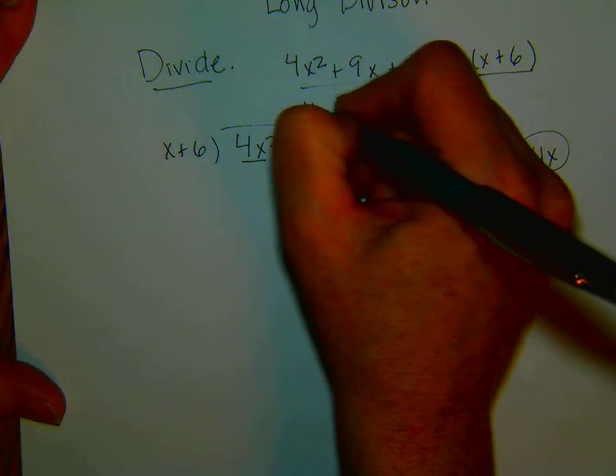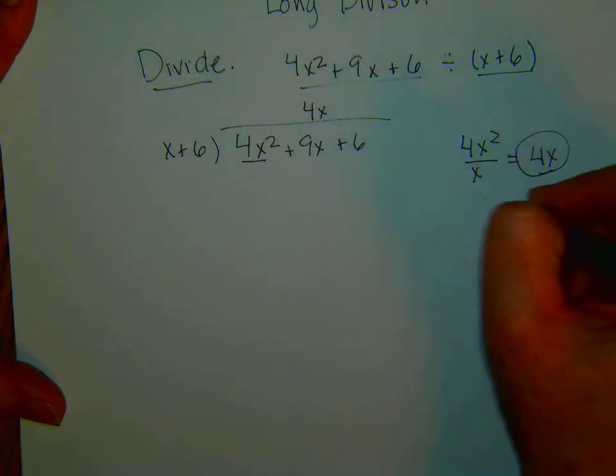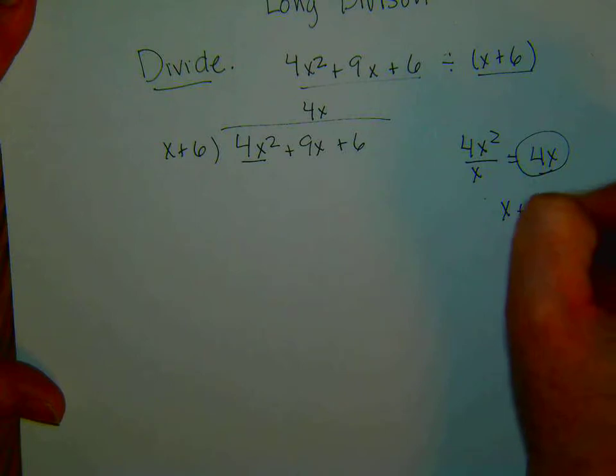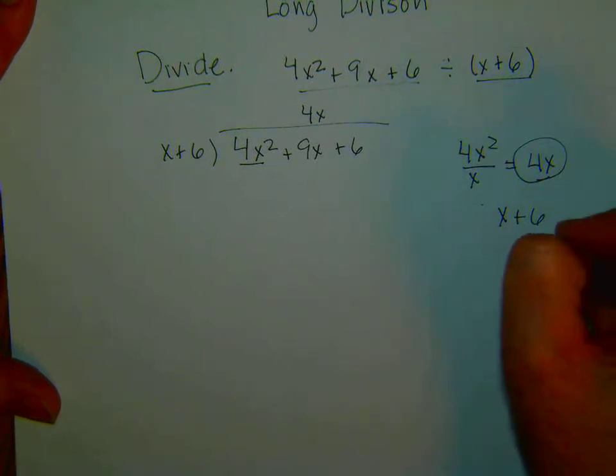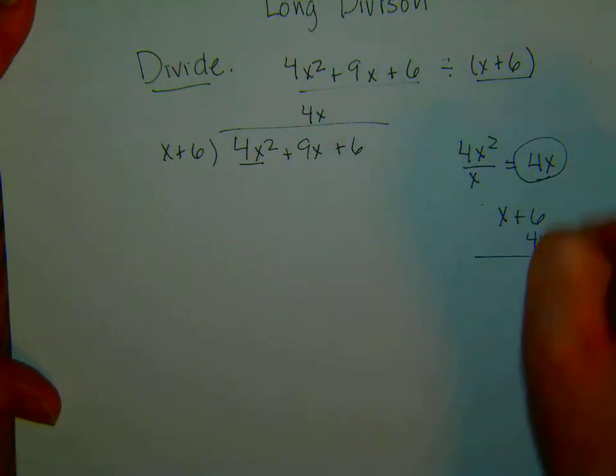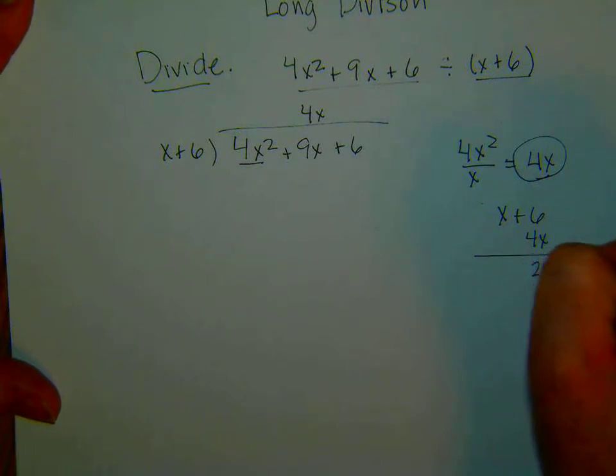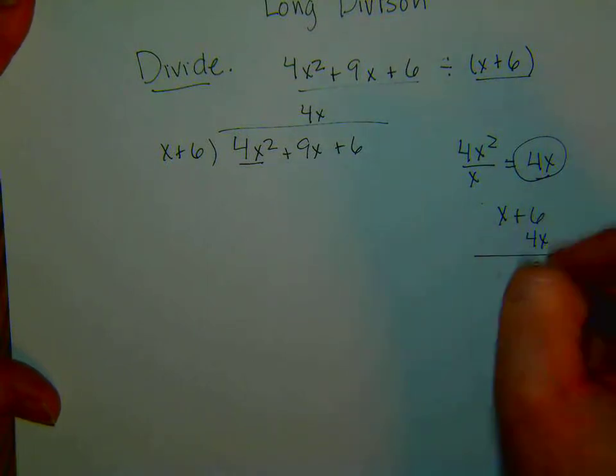We're going to take 4x, then we multiply 4x. So we have x plus 6, multiply times 4x. 4x times 6 is 24x, 4x times x is 4x squared.